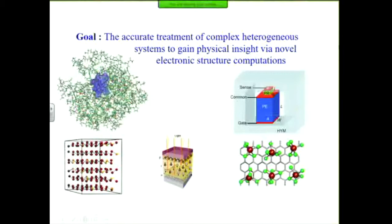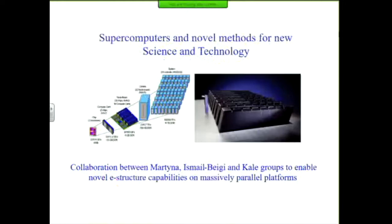The goal of this project is accurate treatment of complex heterogeneous systems — accurate in the quantum mechanical sense — to gain physical insight via novel electronic structure computations. Some example systems we're working on are shown here. The specific collaboration funded by NSF SSISI-2 is for developing novel methods for new science and technology.